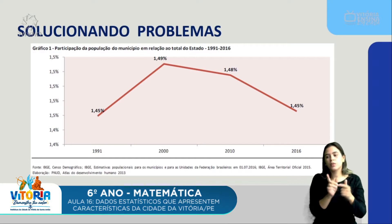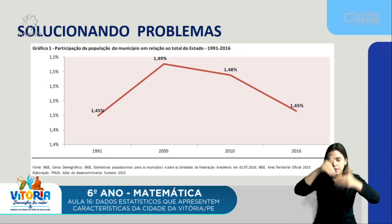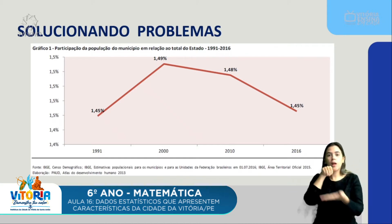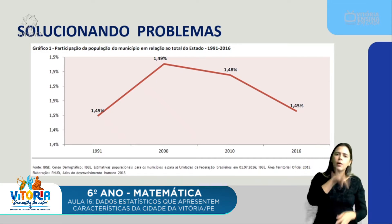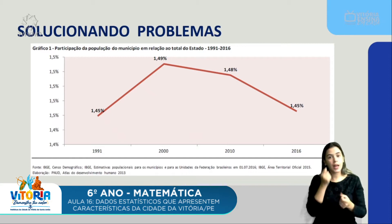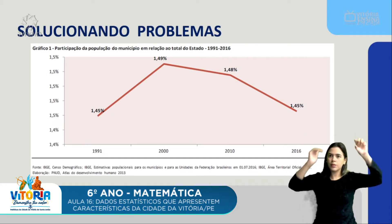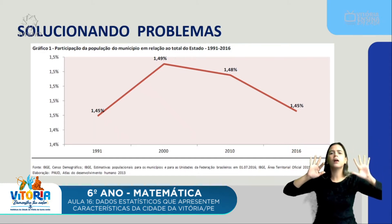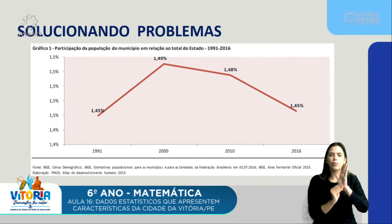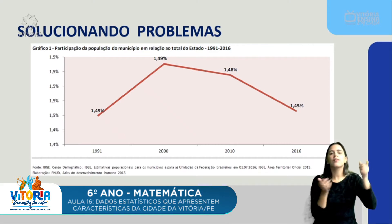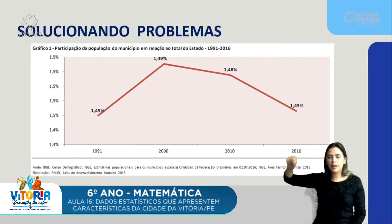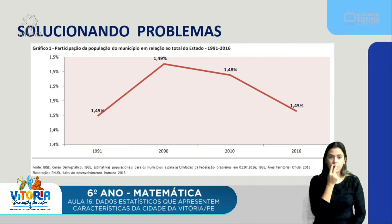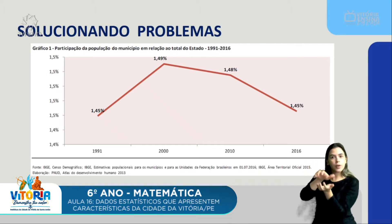Então, a gente traz o primeiro gráfico, que mostra a participação da população do município em relação ao total do Estado, de 1991 a 2016. Assim como na tabela, todo gráfico precisa ter alguns elementos — não pode deixar de ter o título. Lá em cima, na parte alta do gráfico, fica o título, que deve estar legível e representar bem o conteúdo abordado. Nós temos aqui um gráfico de linha, e o título fala sobre a participação da população do município em relação ao Estado, desde 1991 a 2016.